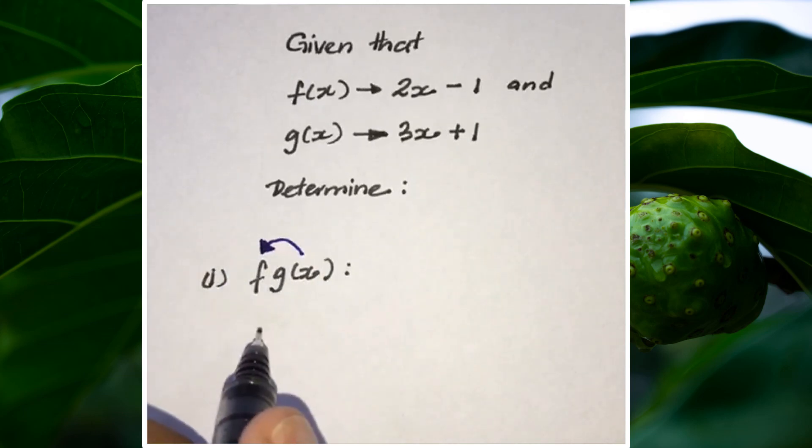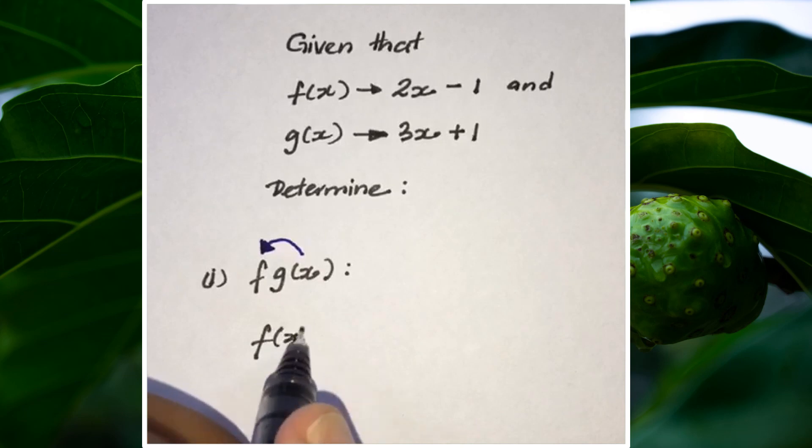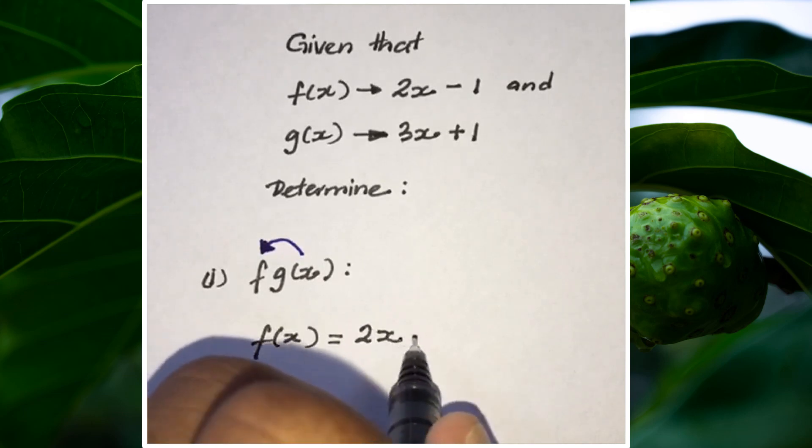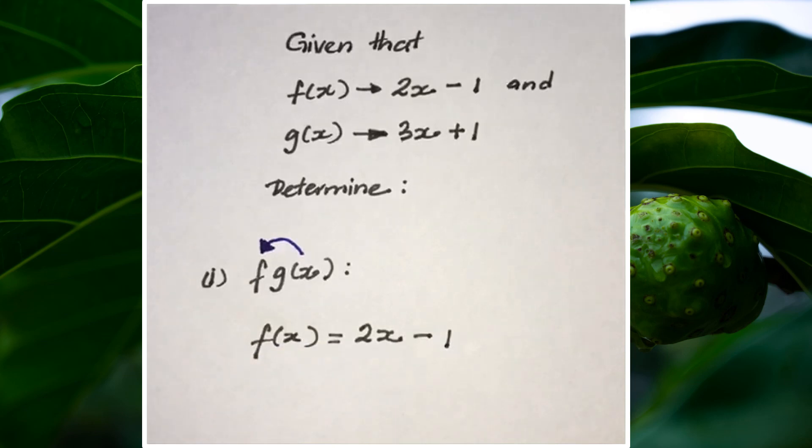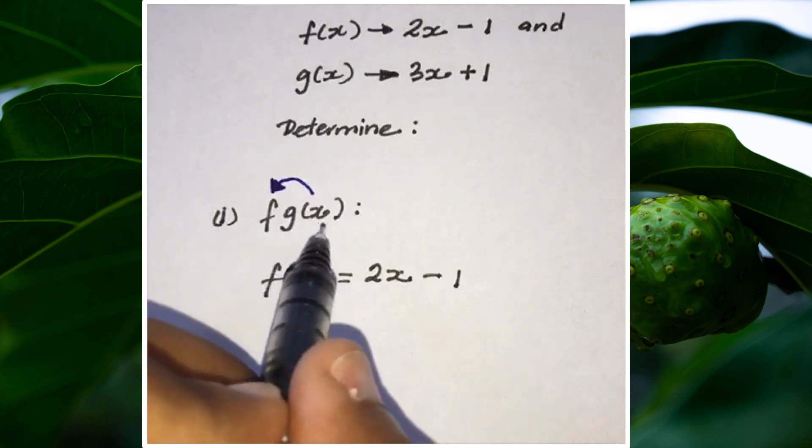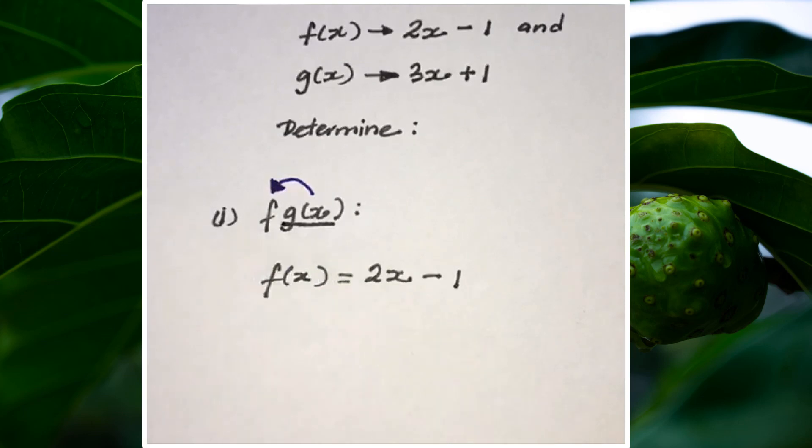So I'm going to rewrite f(x) as 2x - 1. Now remember, I'm going to put the function g inside the host function f. So wherever I see x, I'm going to put the function g(x) in there.